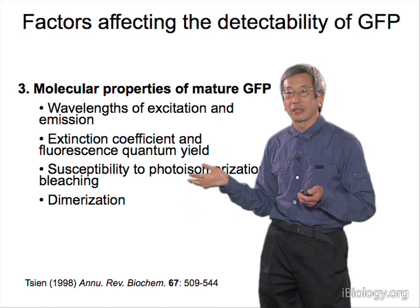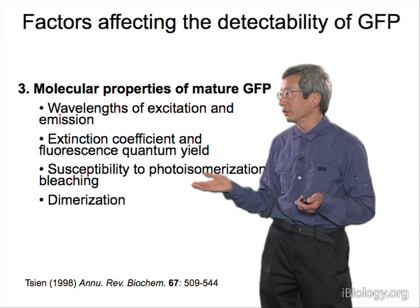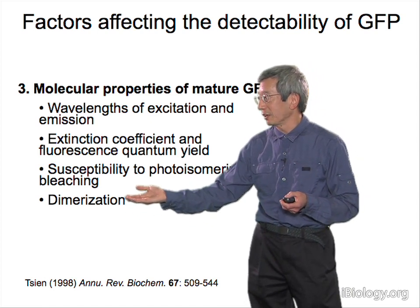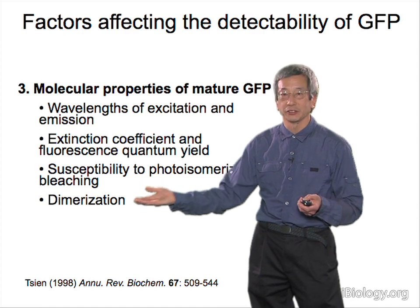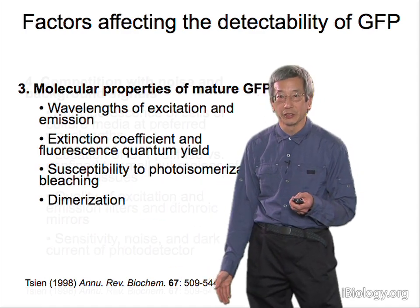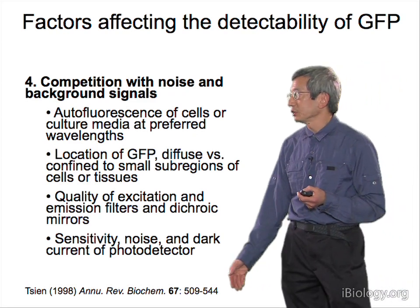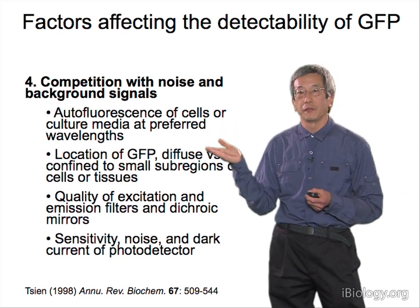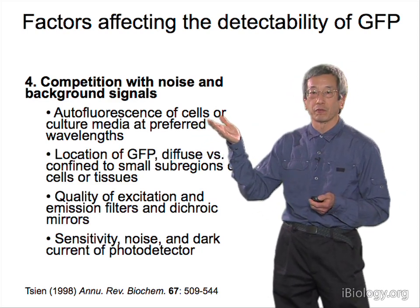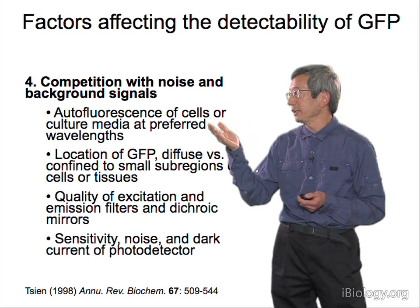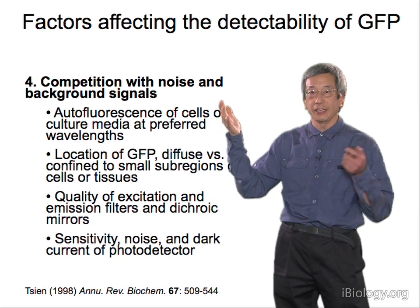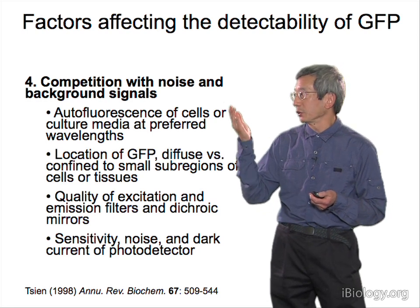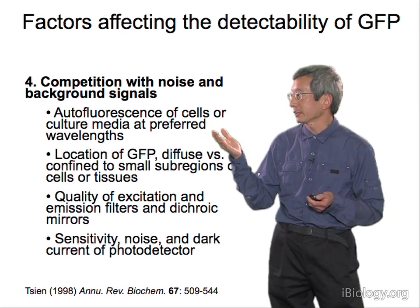Most people, for most applications, just want GFP to shine as brightly as long as possible, and this is still an area of active investigation. I also mentioned the importance of knowing whether GFP is dimerizing, and in some cases getting rid of dimerization, particularly when fusing it to a host protein. Regarding competition with noise and background: a lot of culture media are also fluorescent at similar wavelengths, particularly if they contain riboflavin or serum proteins. That generates a haze of fluorescence unrelated to GFP which will obscure small amounts of it, so you want to eliminate those if you're having a detection problem.